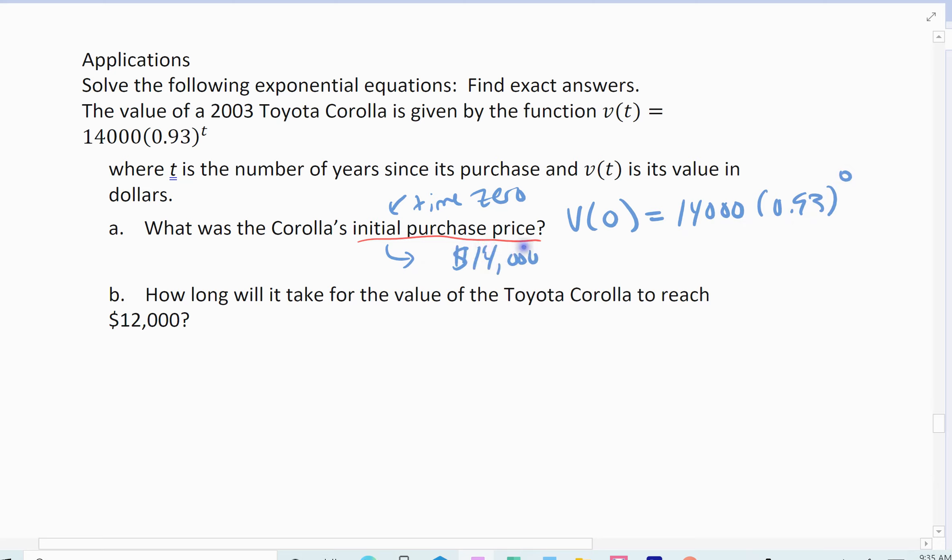So the initial purchase price was that $14,000. So in 2003, this Toyota Corolla, whose value was at $14,000. All right, time zero. That's how much they purchased it for.